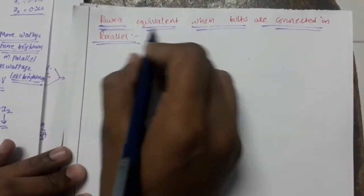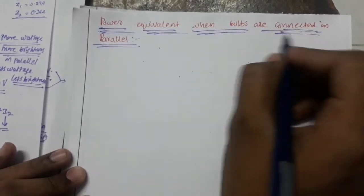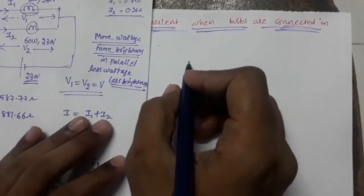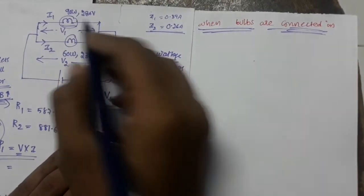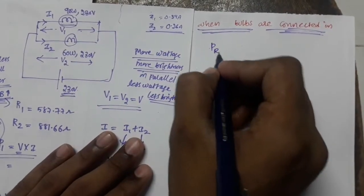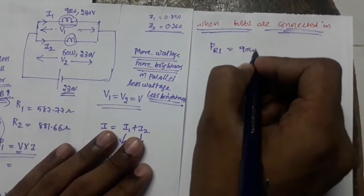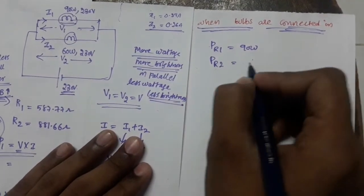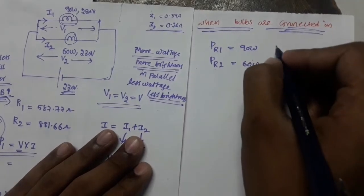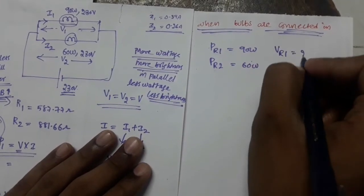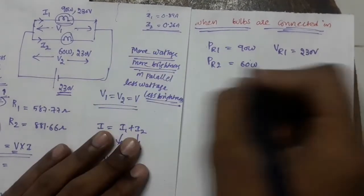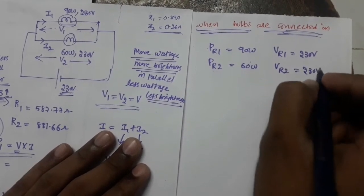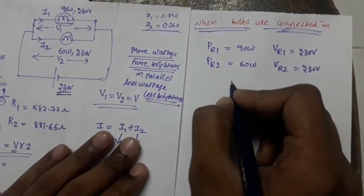Power equivalent when bulbs are connected in parallel. From yesterday's problem: power rating of bulb 1, PR1 = 90 W, and PR2 = 60 W. Voltage rating of bulb 1 = 230 V, voltage rating of bulb 2 = 230 V, and given supply voltage = 230 V.